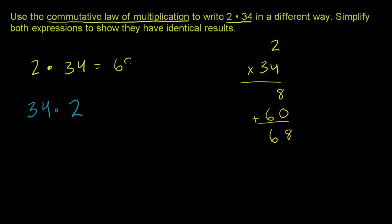So 2 times 34 is 68. Now if you do 34 times 2, 2 times 4 is 8, 2 times 3 is 6. That's why it's always nicer to write the number with more digits on top. It also is equal to 68.